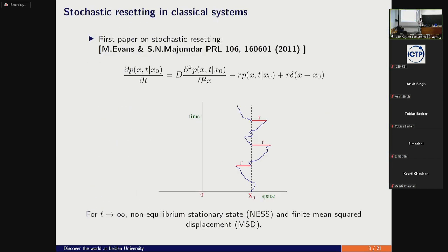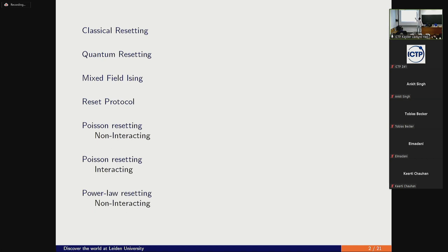Okay, so I'll give a quick overview on classical and then quantum resetting, then I'll introduce the model of mixed field ising, then the reset protocol, and I'll be talking about two different resetting functions. One is Poisson resetting and the other is a power law resetting function.